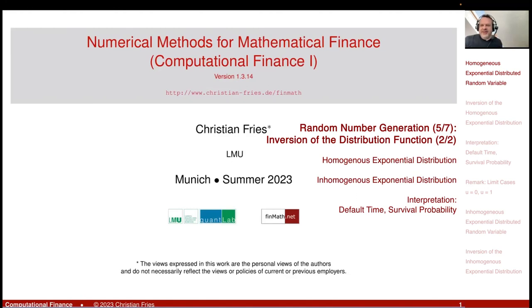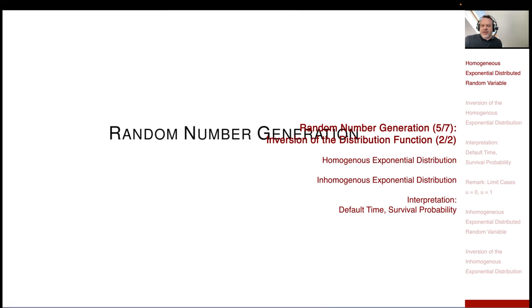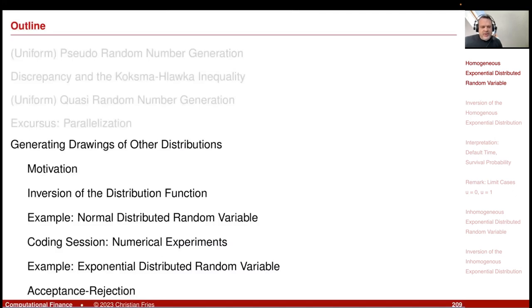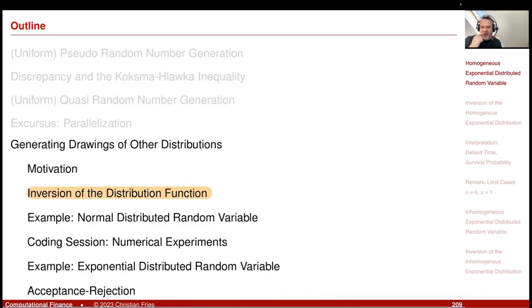Welcome to Numerical Methods. We are still in our section on random number generation. Having started with uniformly distributed random numbers, we have now moved to generating random number sequences of other distributions. Last time we looked at the inversion of the distribution function method, and we discussed the example of the normally distributed random variable and had a code session.